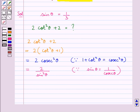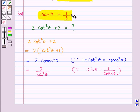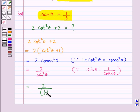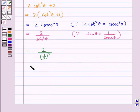Now putting the value for sin θ as 1 upon 3, we get this is equal to 2 upon 1 upon 3 whole squared. So this is further equal to 2 upon 1 upon 9, and so this is equal to 2 into 9 which is equal to 18.